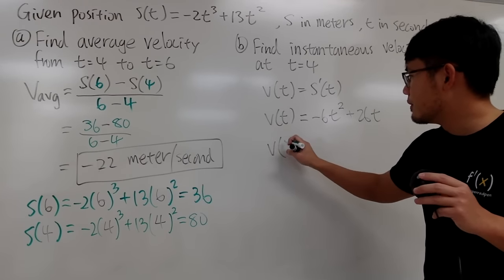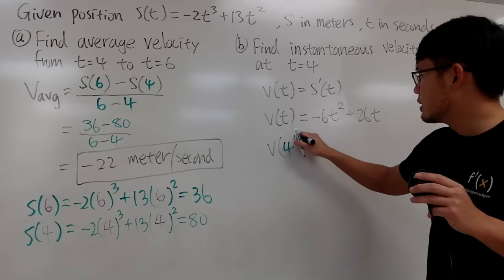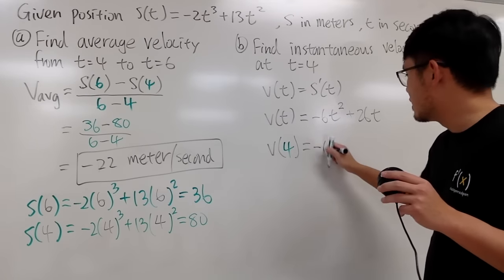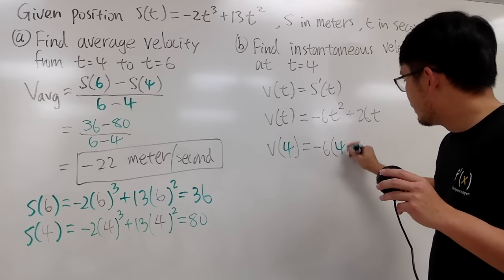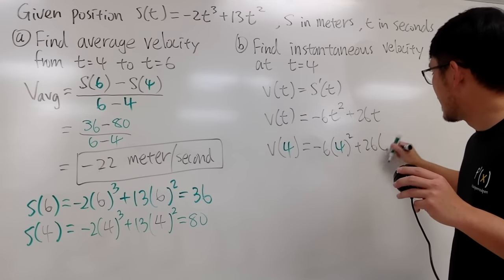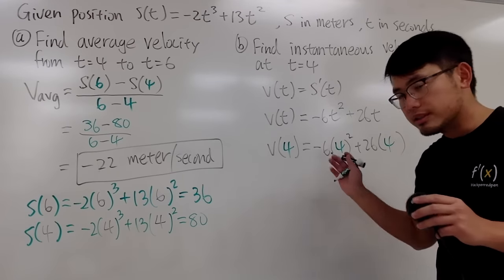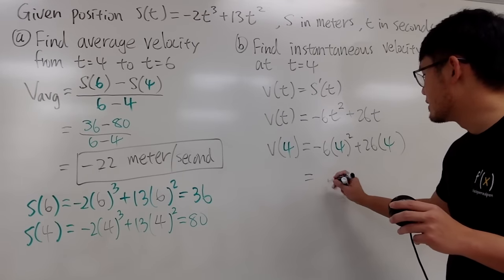And then, to get v of 4, same thing, we're pretty much just plugging 4 into all the t, so we can just get negative 6 times 4 squared plus 26 times 4, like this. Work this out, in the end, you end up with 8.